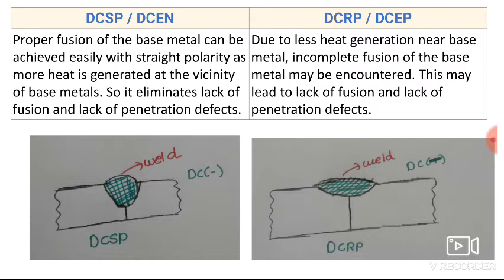In reverse polarity, due to less heat generation near the base metal, incomplete fusion of the base metal may be encountered. This may lead to lack of fusion and lack of penetration defects, since the maximum heat is generated at the electrode tip and less heat is generated at the base plate.